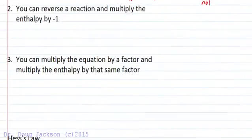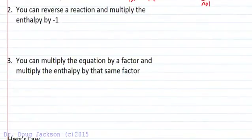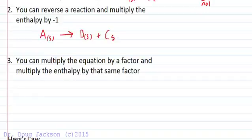Another property is that we can reverse a reaction and multiply that enthalpy by negative 1. If we have the endothermic process we just talked about, A decomposes into B plus C, and that delta H was plus 10, if we take the negative of that equation and the negative of the delta H...